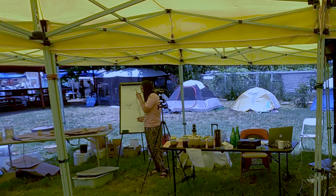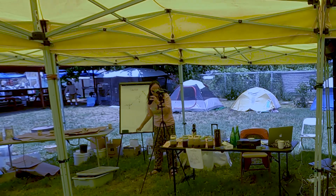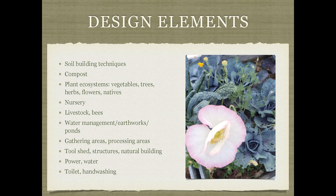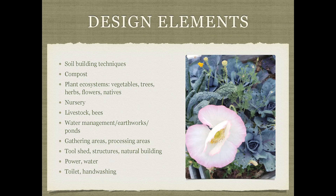For water management and earthworks, we also have gathering areas and processing areas. Gathering areas where people can hang out — some chairs, tables, or logs in a shady area — are helpful. Processing areas for harvesting and food distribution may need a sink, counter space, shelves, or crates for washing and processing vegetables. You'll probably want a tool shed, maybe a compost toilet structure, an herb drying shed, or just a little hangout space.